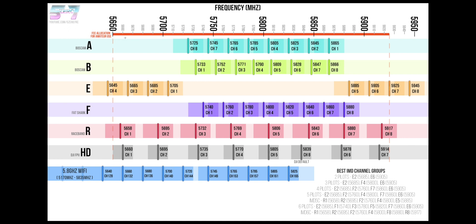...is labeled the FCC allocation for amateur use. This is the legal range that you can use in the United States as a ham radio operator. As you can see, there are some bands like band E that has channel 4 and channel 8 which are definitely outside of the legal range, and then there are other channels like race band that kind of bleed over into the edge.